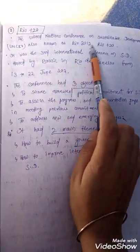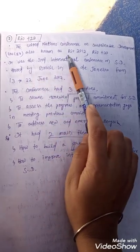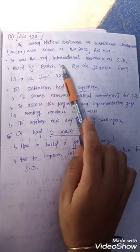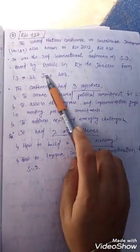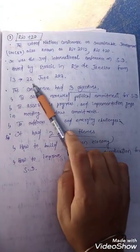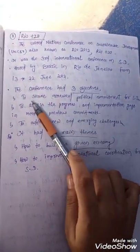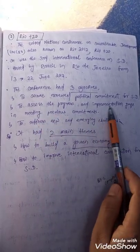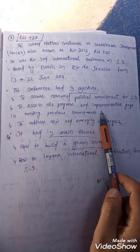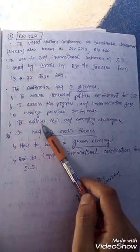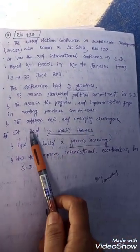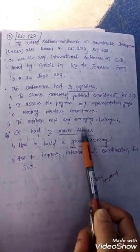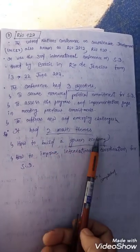Rio+20, also known as the United Nations Conference on Sustainable Development (UNCSD), was the third international conference on sustainable development, hosted by Brazil in Rio de Janeiro from June 13 to 22, 2012. The conference had three objectives: to secure renewed political commitment for sustainable development; to assess the progress and gaps in meeting previous commitments; and to address new and emerging challenges.